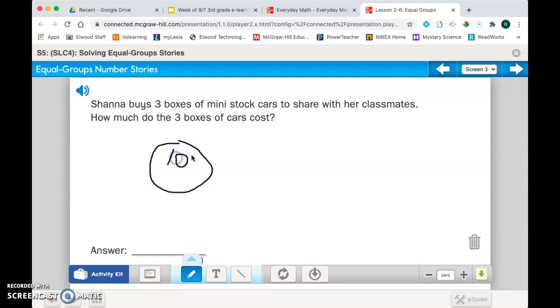There's ten in this box. She buys three. So I'm gonna actually make three circles. And there are ten in each one. Ten, ten, and ten.